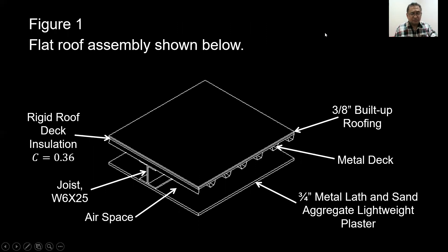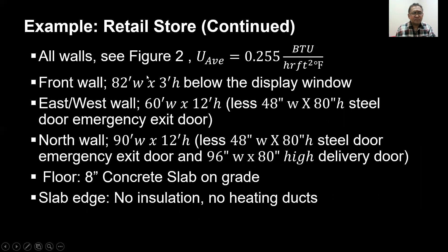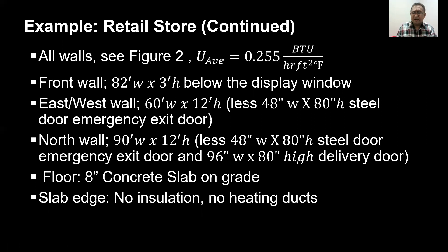This figure shows the roof assembly. You have a rigid roof deck with insulation having a C value of 0.36. You have a joist made of a W6 by 25, an airspace, a metal lath and sand aggregate lightweight plaster, a metal deck, and a 3.8 inch built-up roofing. All walls as shown in figure two in the next succeeding slides will have a U average of 0.255 BTU per hour square foot degree Fahrenheit.